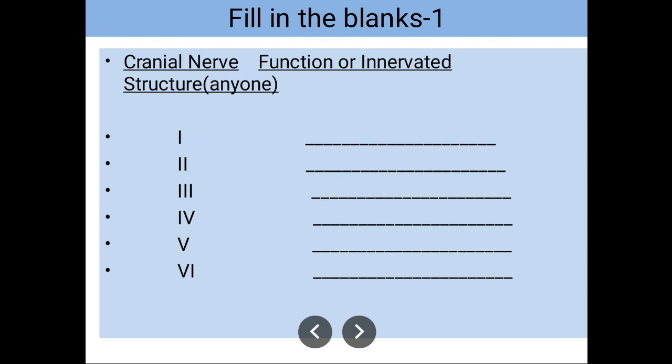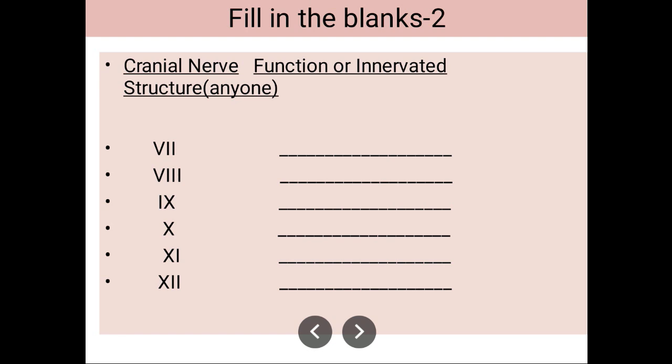Number six here we got, its name as the abducens, and it is innervating the lateral rectus muscle of the extraocular muscles. Now the number seven cranial nerve, that is the facial nerve, innervating all the muscles of the face.